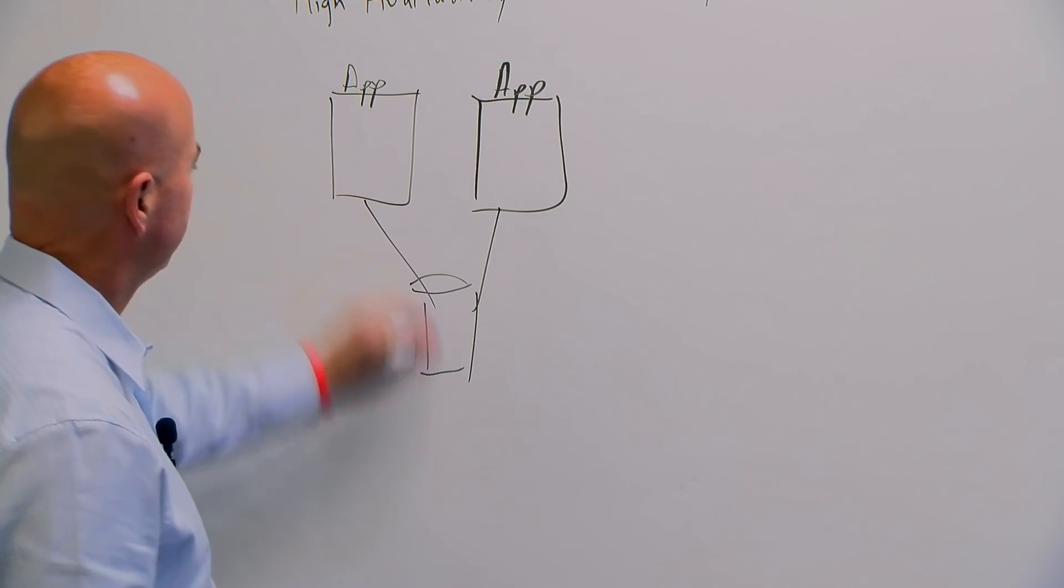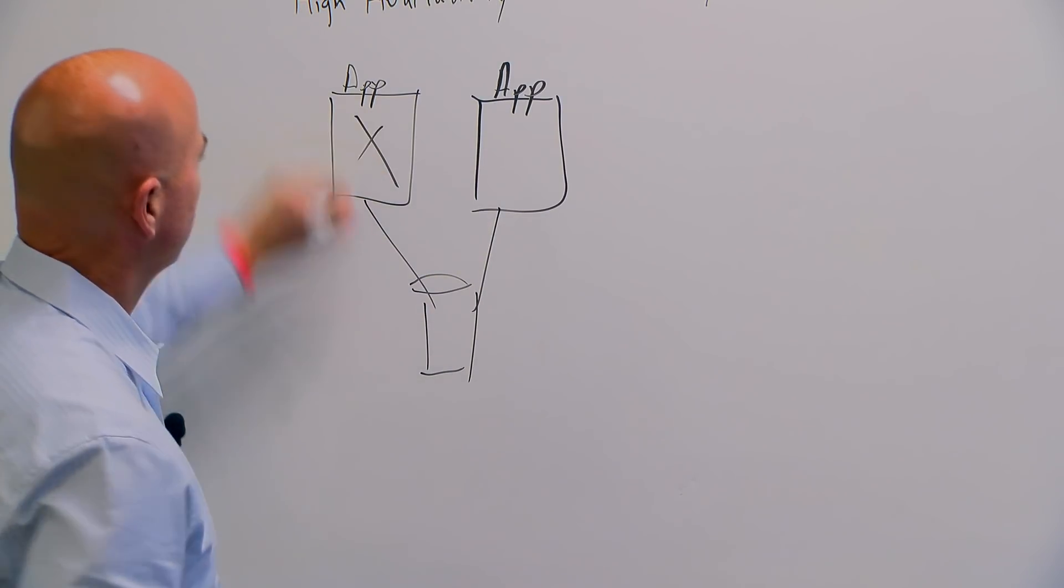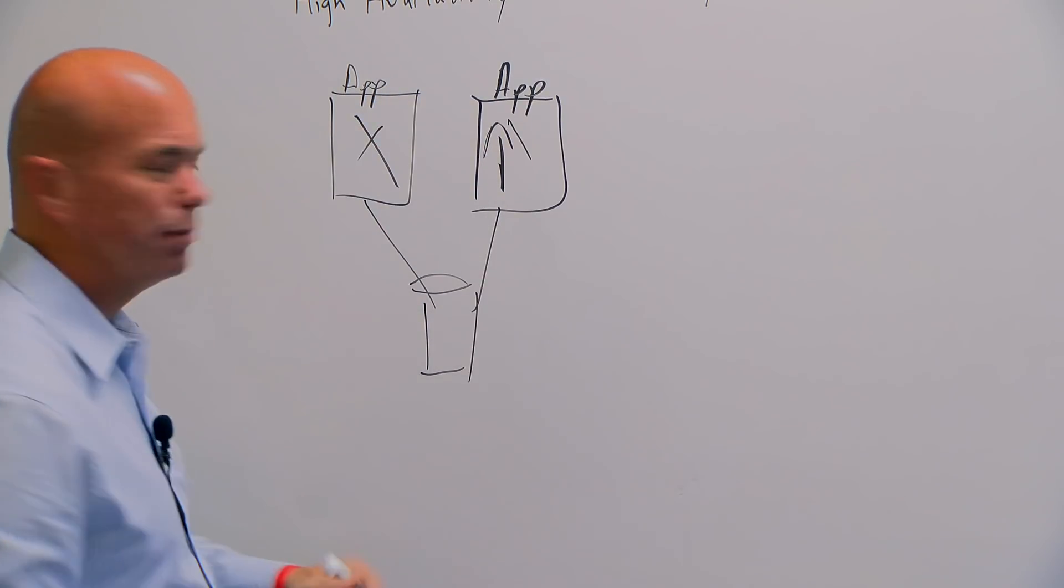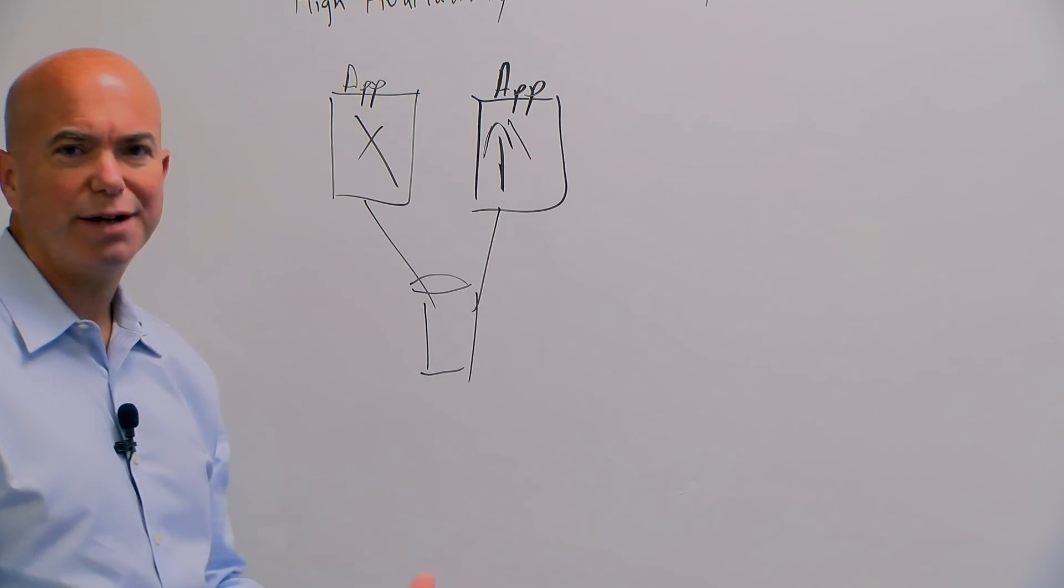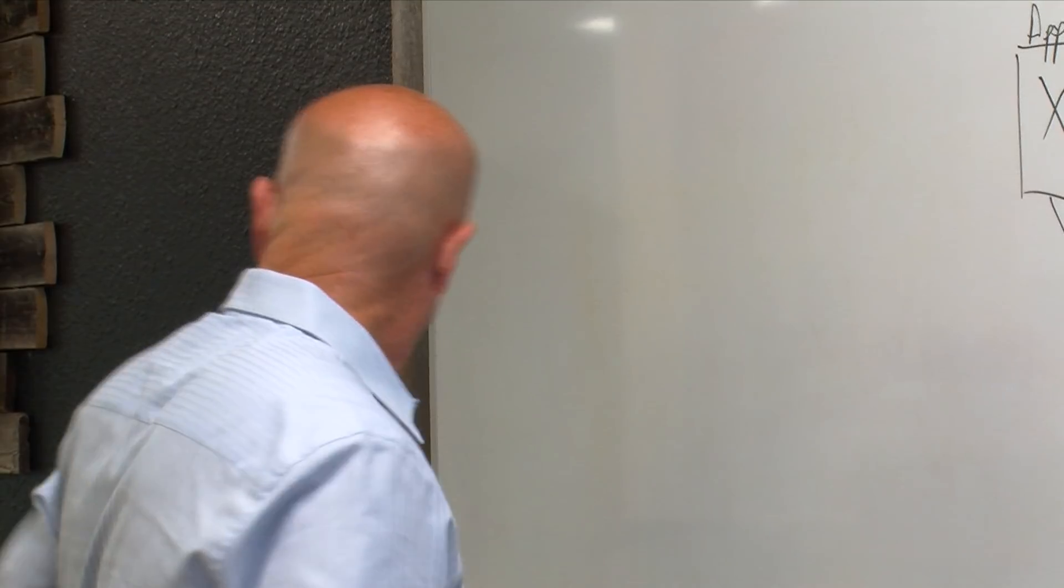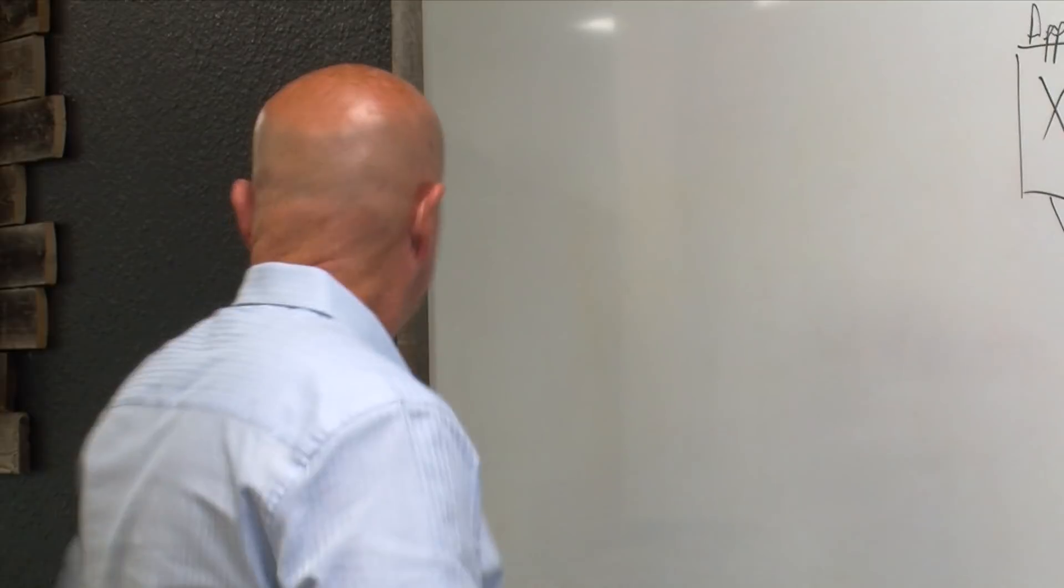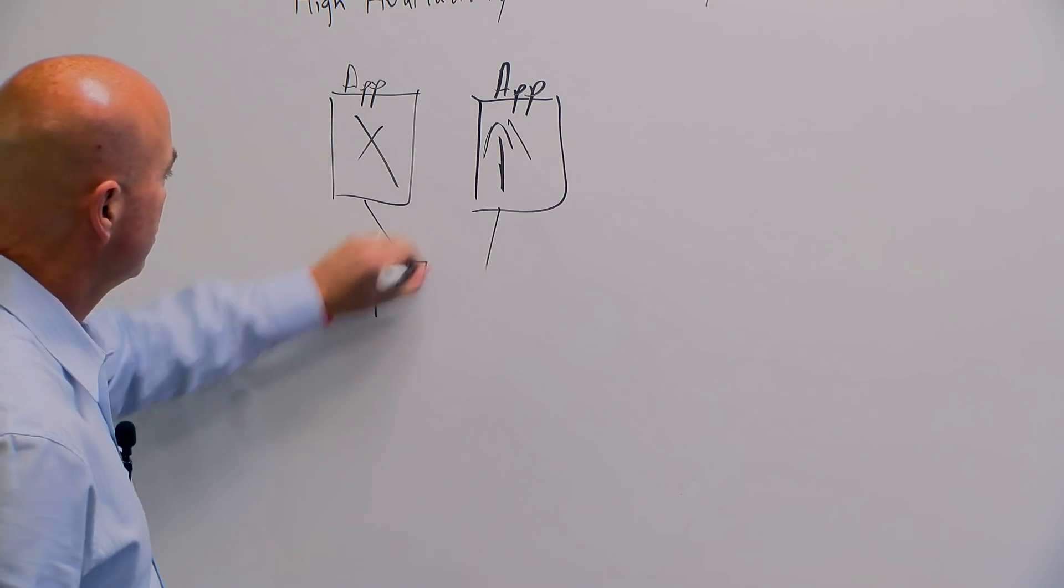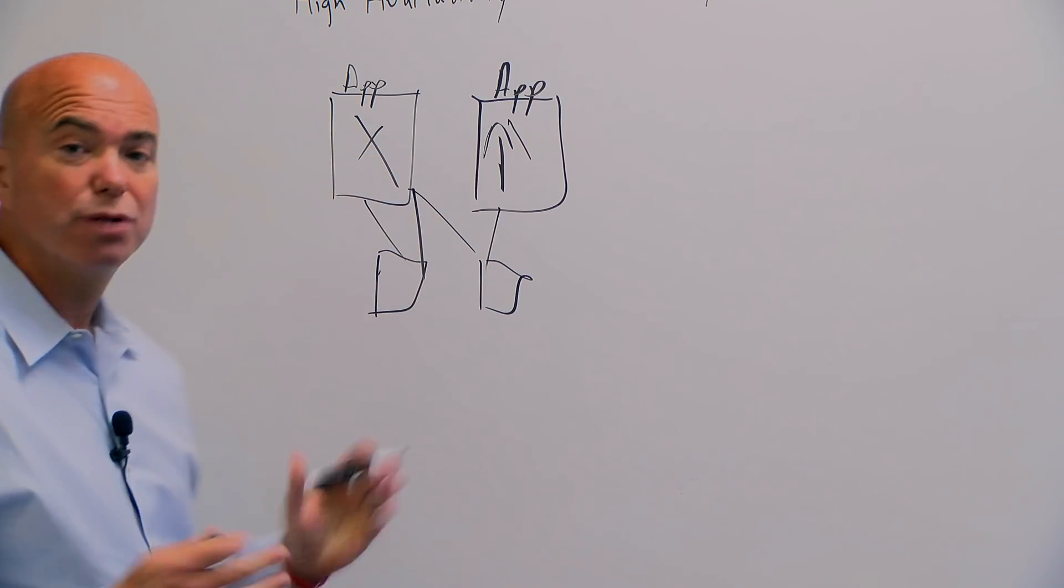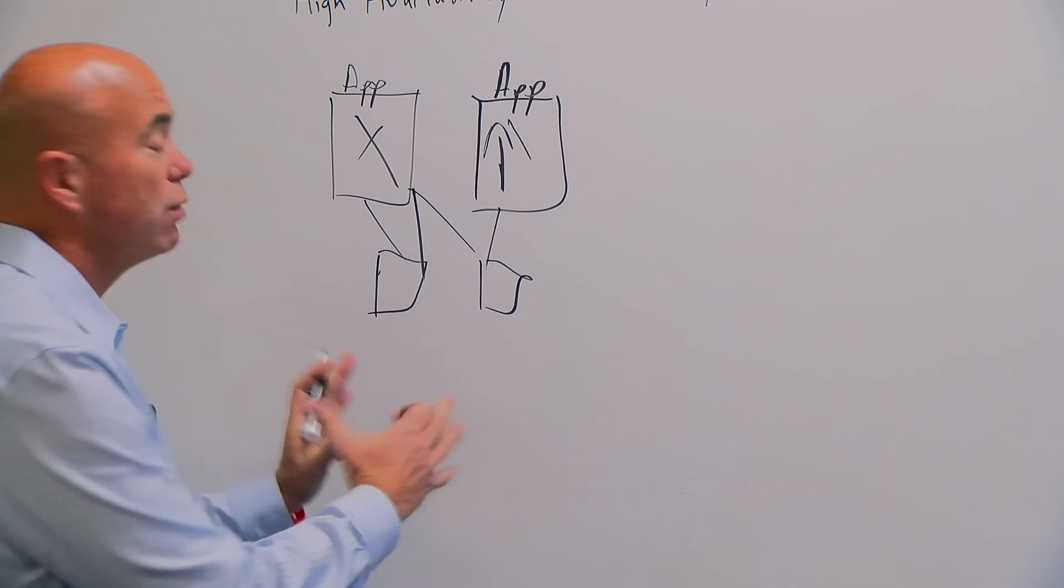We might have shared storage so that if this server creates a problem, we can spin this one up and be back up and running with very little downtime. It doesn't necessarily have to be shared storage. It could also be storage on each system that is synchronously mirrored between the two systems.